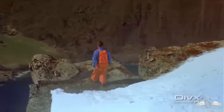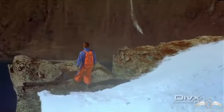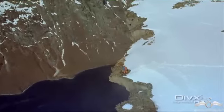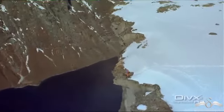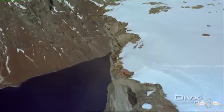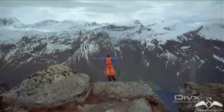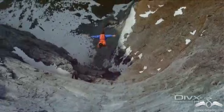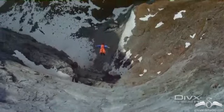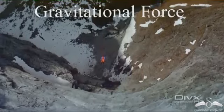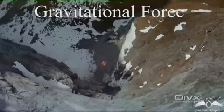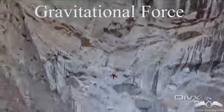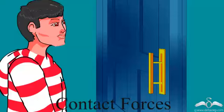If we throw an object upwards, it eventually comes down. What pulls it down? The earth pulls it down. The earth exerts a force in the downward direction on all objects, and this force is known as the gravitational force. So gravitational force is also a non-contact force.